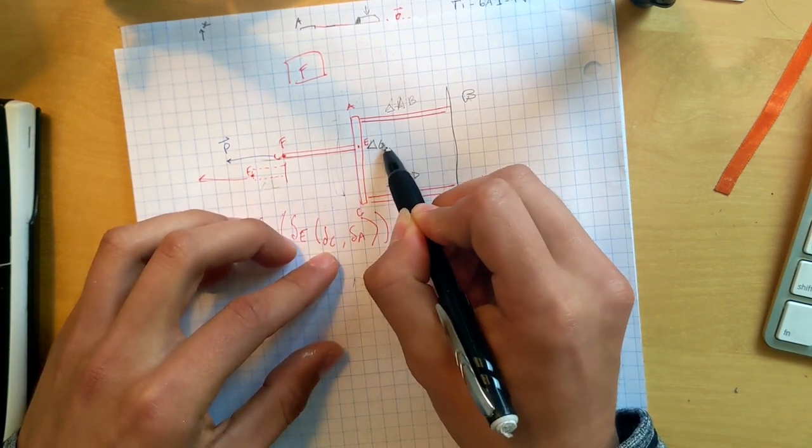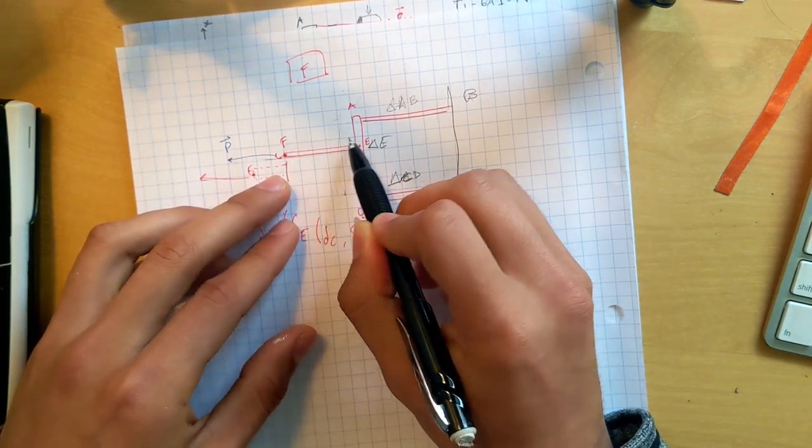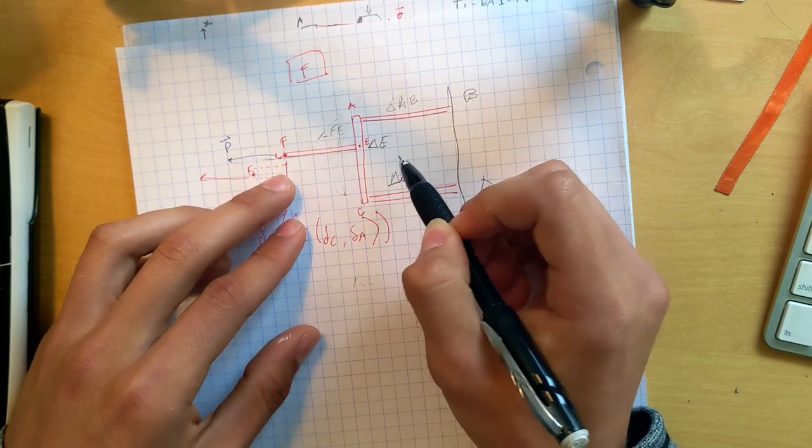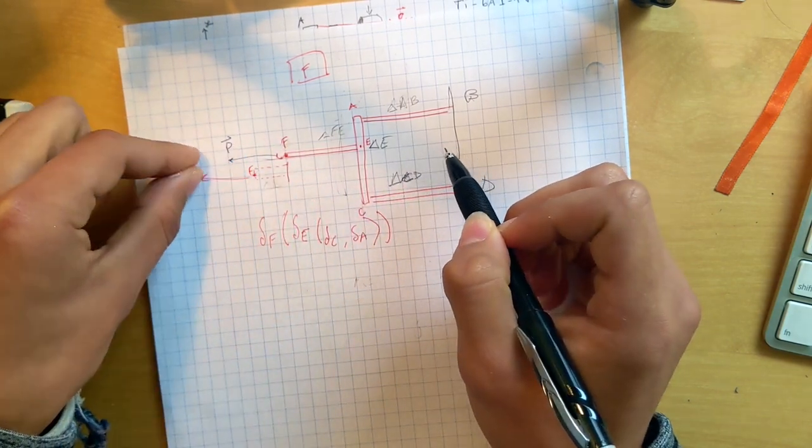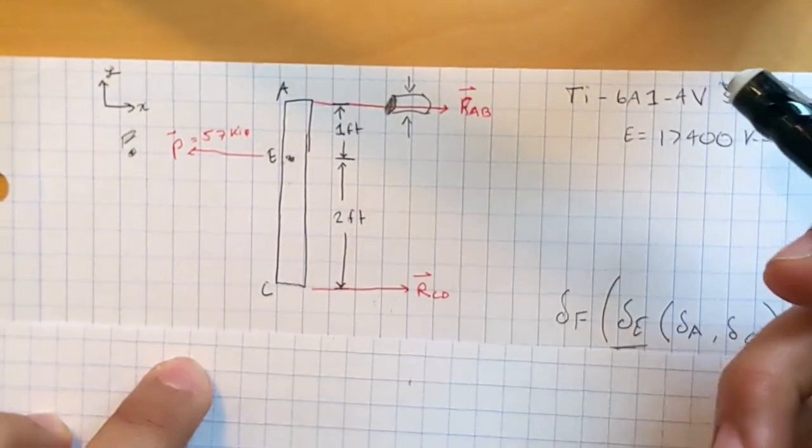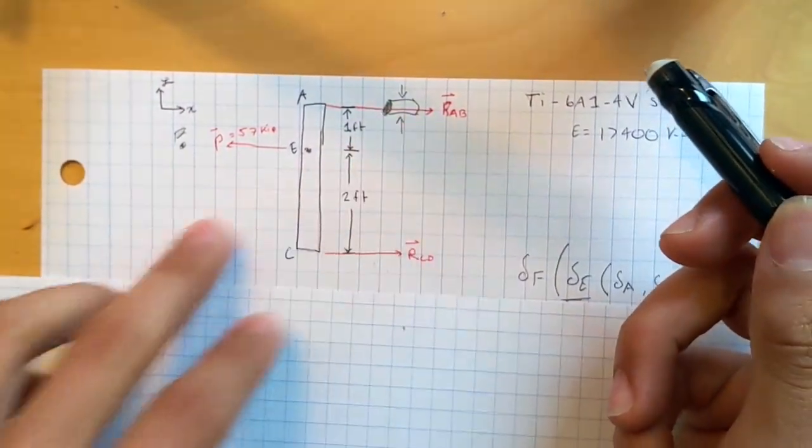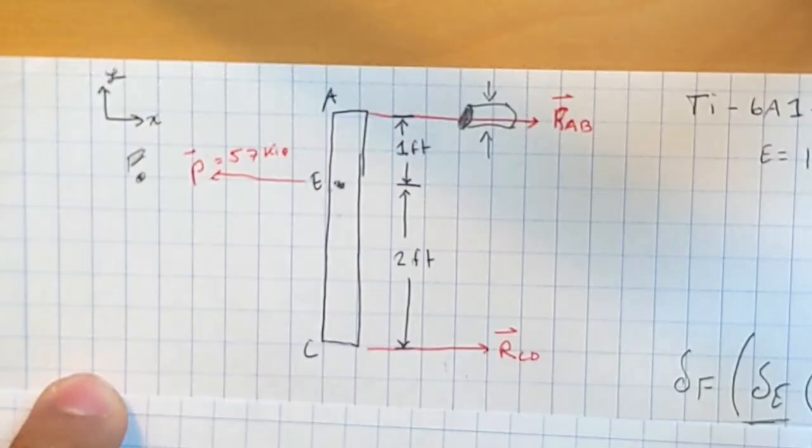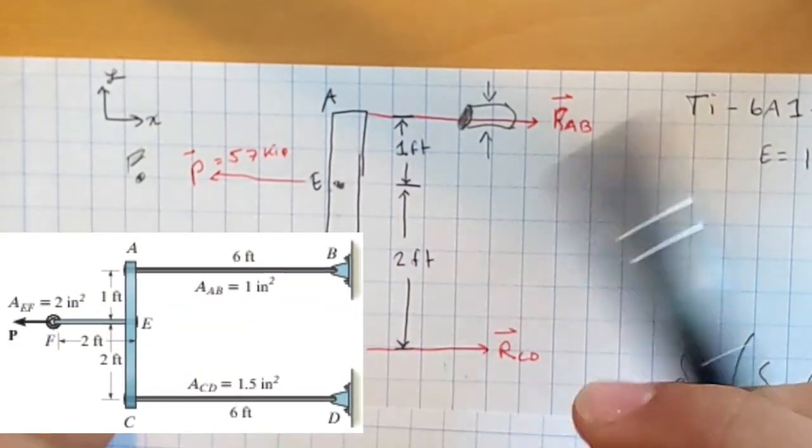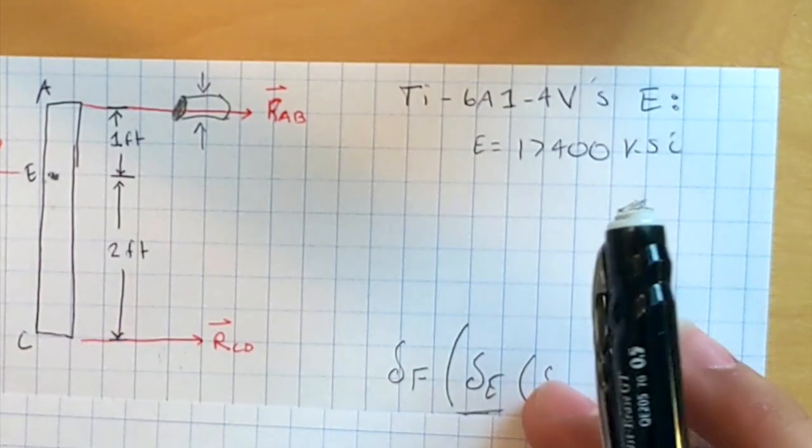Which will tell us the change in length of E, which we can add to the change in length of FE. Because these are all being stretched, these are all getting longer. All right, we got this free body diagram going here, and we know the Young's modulus, we know all these dimensions, so we'll be using these to plug in our equations.